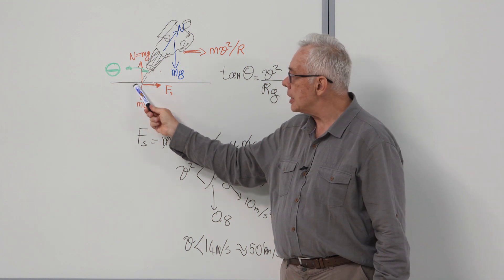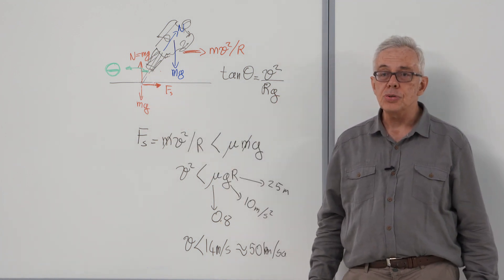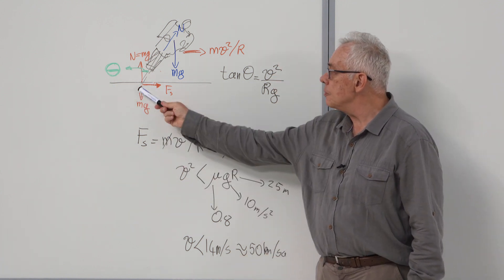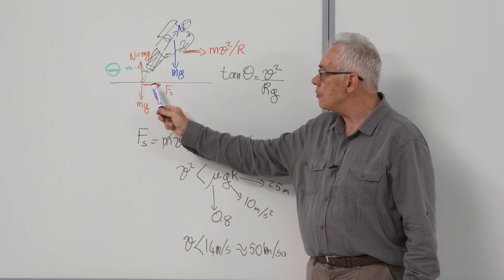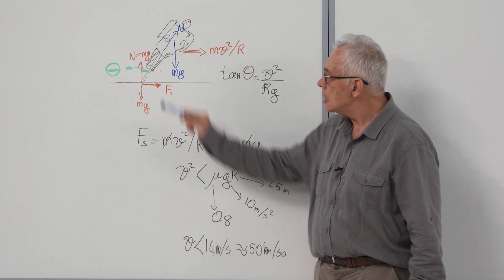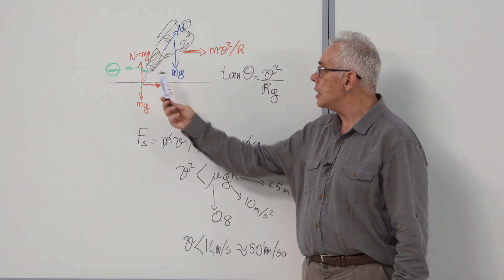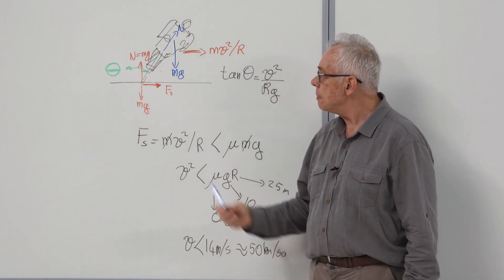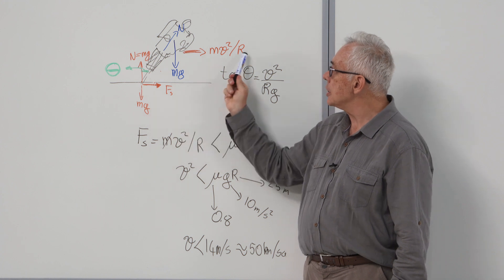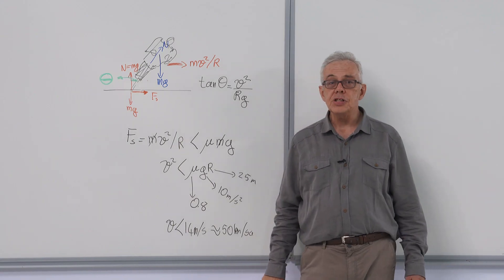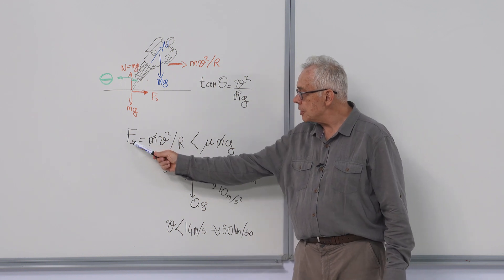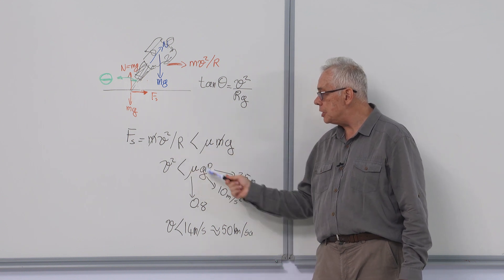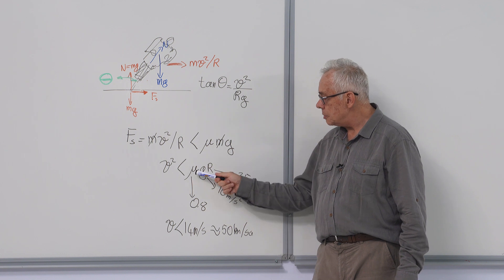If we look at what happens where the wheel comes in contact with the road surface, assuming that the road is not banked, the inward force is the frictional force providing centripetal acceleration. There is mg pulling it down and normal force upward. Normal force is equal to mg. And centripetal acceleration is provided by the static frictional force. So frictional force is mv squared over r and must be less than mu mg. So v squared must be less than mu gr.